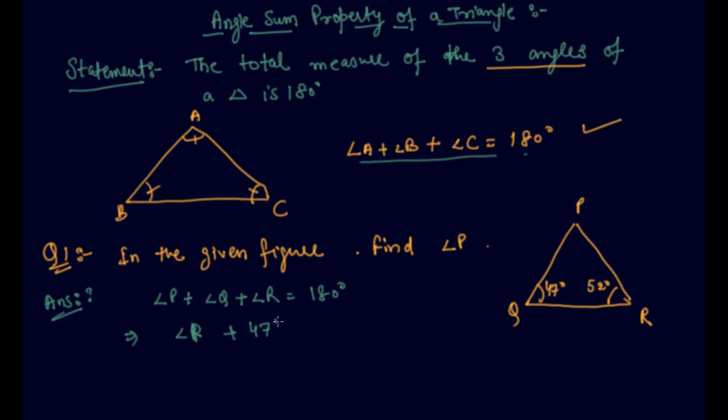I will write directly the values of both these angles. The angle p would be 180 minus 47 plus 52, which is 99. This is coming out to be 81 degrees. The angle p is coming out to be 81 degrees.